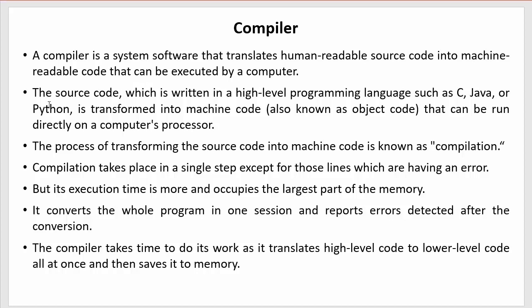The source code written in a high-level programming language such as C, Java, or Python is transformed into machine code — also known as object code — that can be run directly on a computer's processor. The compiler transforms high-level languages like C, C++, Java, Python, or PHP into machine code or object code, which can be easily understood by the computer.